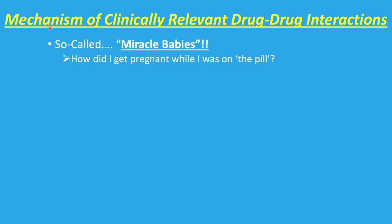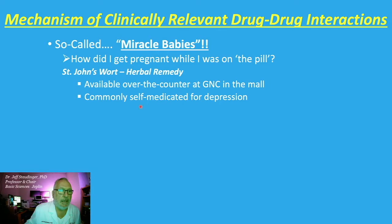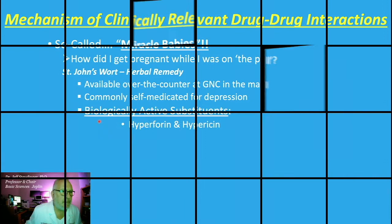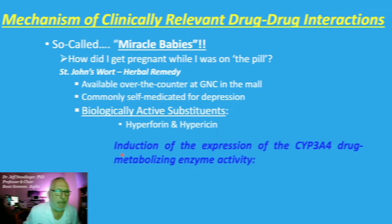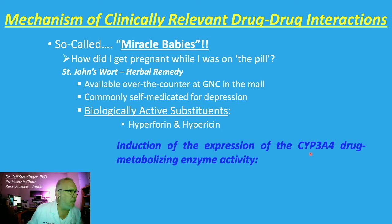As an example of drug-drug interactions, or herb-drug interactions in this case, about so-called miracle babies — how did I get pregnant while I was on the pill? St. John's Wort is an herbal remedy available over-the-counter at GNC, self-medicated for depression.